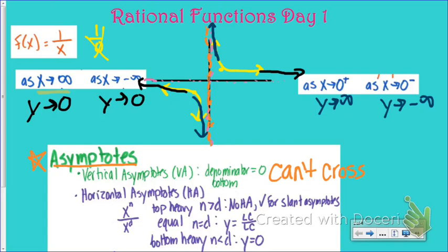The other kind is a horizontal asymptote. Horizontal asymptotes help us see what our graph is going to do at the ends — what it's going to go towards. You actually can cross a horizontal asymptote. Where horizontal asymptotes come from, you look at the degree of the top and the degree of the bottom, using n for numerator and d for denominator. If the degree is top-heavy — higher on the top — there's going to be no horizontal asymptote; instead, tomorrow we'll look for what's called a slant asymptote.